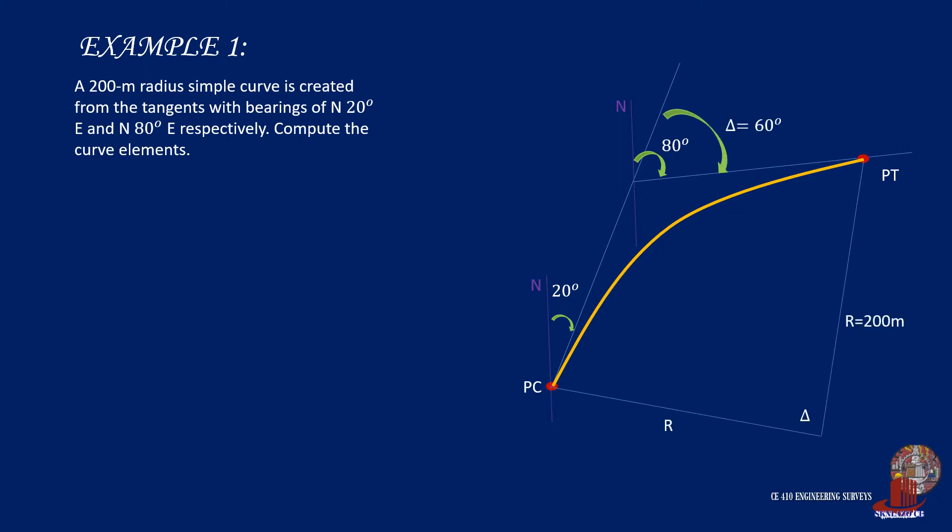We are then able to solve for the elements. We start with the tangent distance which by formula is taken from R tangent of delta over 2. By plugging the values we place, 200 times tangent of 60 degrees over 2 equals 115.47 meters.